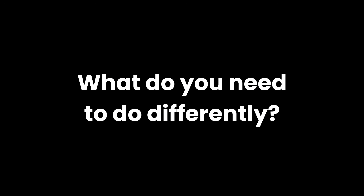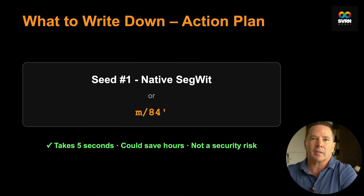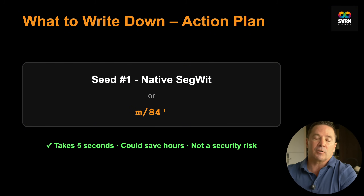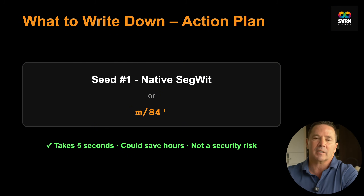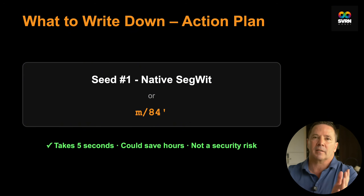So how do you actually use this knowledge? First, when you set up a new wallet, don't just record your seed phrase — record what address type you're using. Keep a simple note: native SegWit or Taproot, or just write M/84 for native SegWit or M/86 for Taproot. It takes two seconds and could save a lot of heartache later.